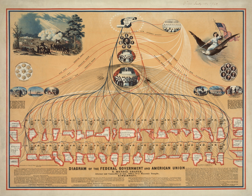Since the American Civil War, the powers of the federal government have generally expanded greatly, although there have been periods of legislative branch dominance — e.g., the decades immediately following the Civil War — or when states' rights proponents have succeeded in limiting federal power through legislative action, executive prerogative, or by constitutional interpretation by the courts. One of the theoretical pillars of the U.S. Constitution is the idea of checks and balances among the powers and responsibilities of the three branches of American government: the executive, the legislative, and the judiciary.